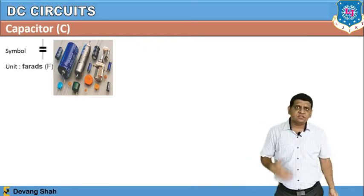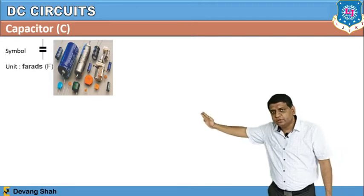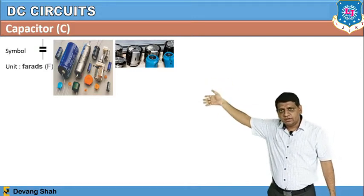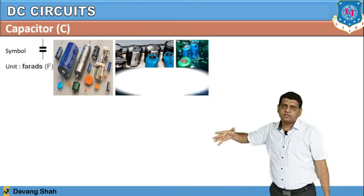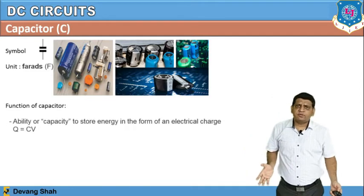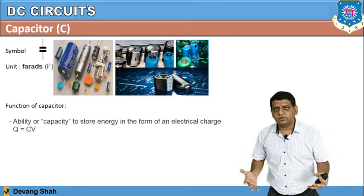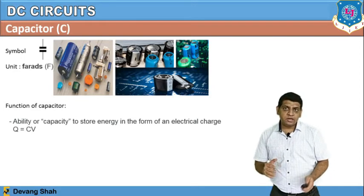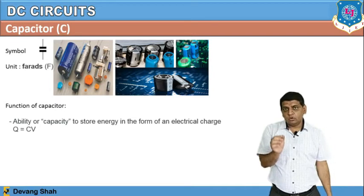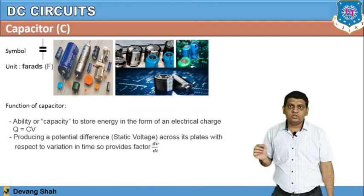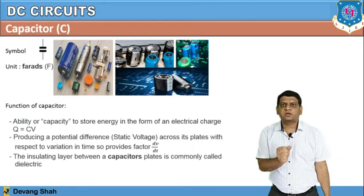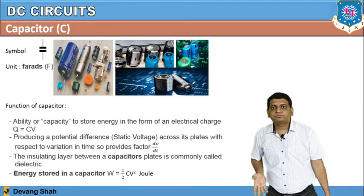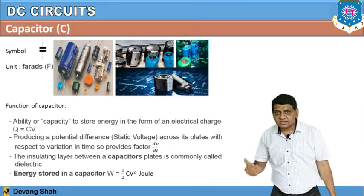Now let us discuss the capacitor. The symbol of a capacitor has the unit Farad. In the market it looks like this, and you can use capacitors in a circuit. The function of a capacitor is to store energy in the form of charge, where Q = CV. It is not a straightforward element because its behavior changes with respect to time, giving a rate of change of voltage with respect to time — dv/dt. This dv/dt will be used in the analysis of time-domain RC or RL circuitry.